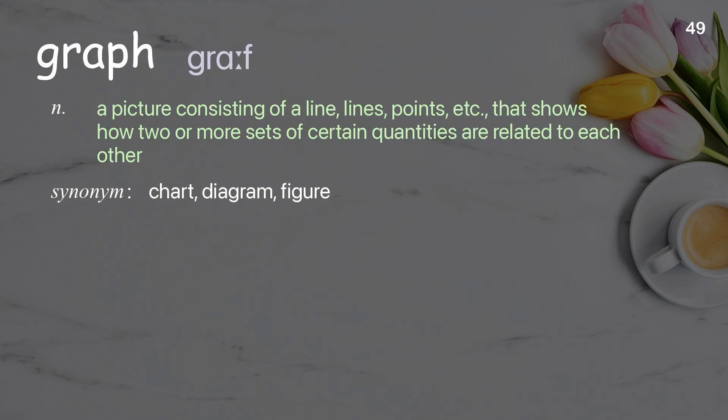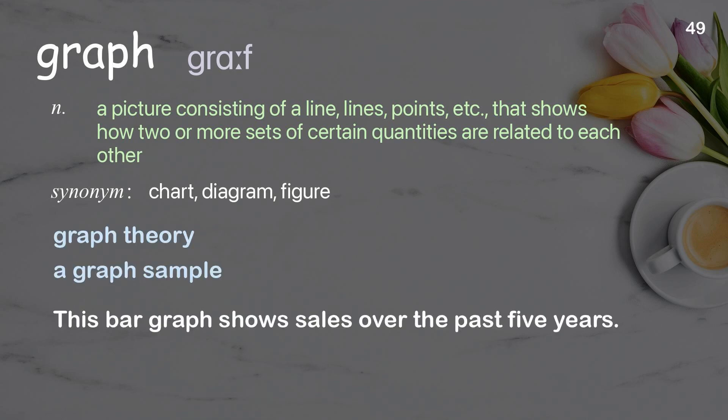Graph: a picture consisting of lines, points, etc. that shows how two or more sets of certain quantities are related to each other. Examples: graph theory; a graph sample. This bar graph shows sales over the past five years.